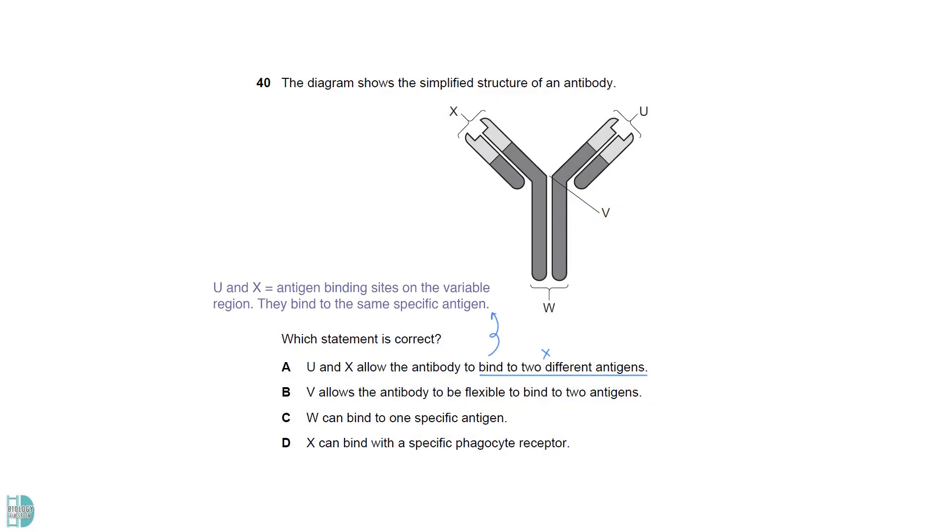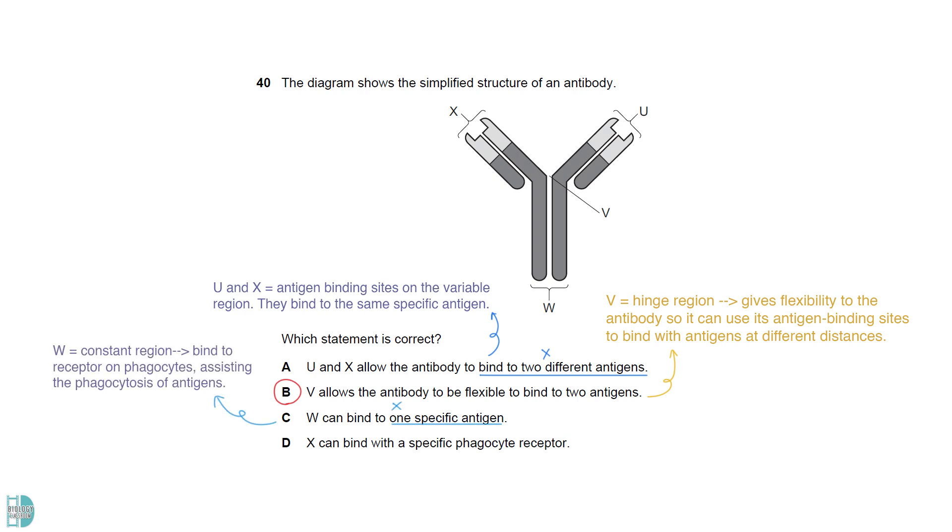U and X are the antigen binding sites on the variable region. They bind to the same specific antigen. V is the hinge region. It gives flexibility to the antibody so it can use its antigen binding sites to bind with the antigens at different distances. C is wrong as W is the constant region. Its function is to bind to the receptor on phagocytes, assisting the phagocytosis of antigens. X is an antigen binding site, so it will not bind to phagocyte receptors.